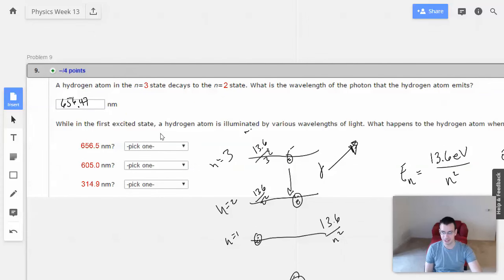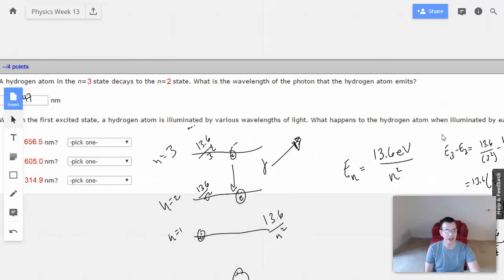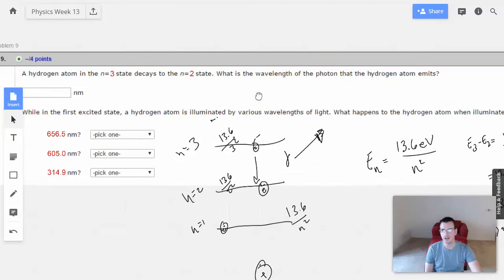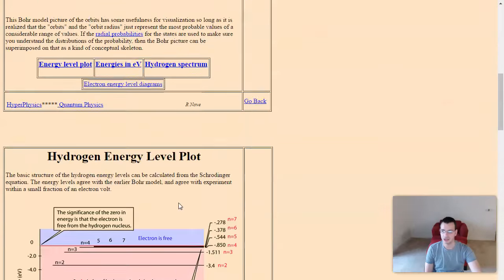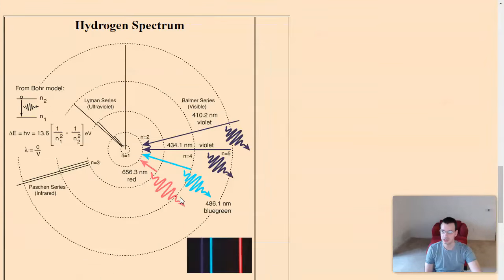While in the first excited state, a hydrogen atom is illuminated by various wavelengths of light. What happens to the hydrogen atom when illuminated by each wavelength? Alright. Let's see here which can give me the best.